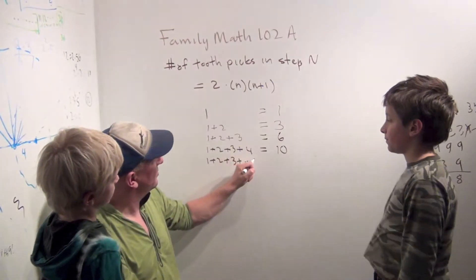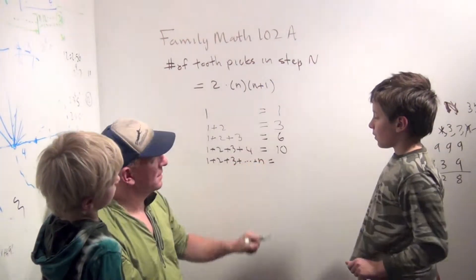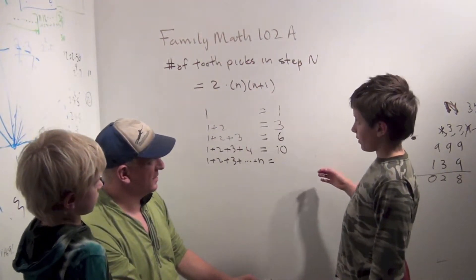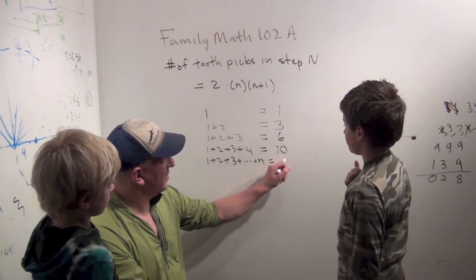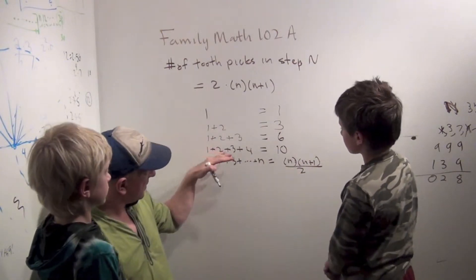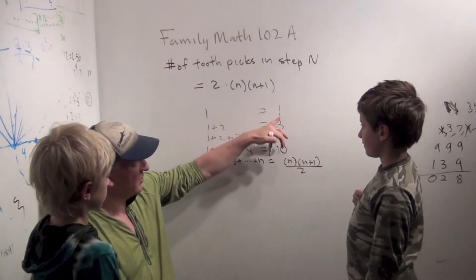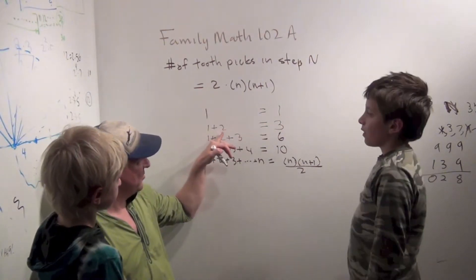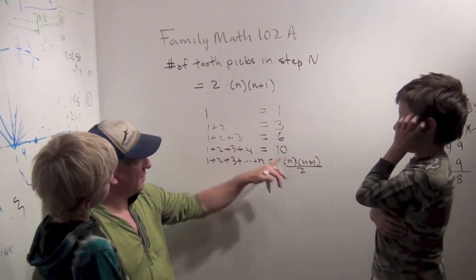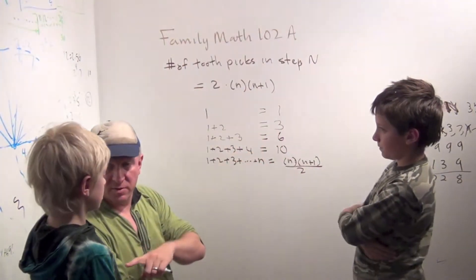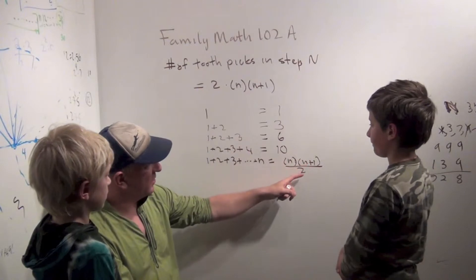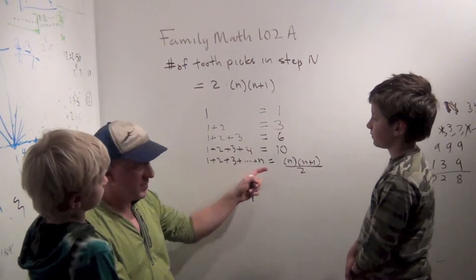Do you remember what the formula for the sum of the integers up to N is? It's N times N plus 1 over 2. So for N=1: 1 times 2 over 2 is 1. Up to N=2: 2 times 3 divided by 2 is 3. For N=3: 3 times 4 is 12, divided by 2 is 6. For N=4: 4 times 5 is 20, divided by 2 is 10. So N times N plus 1 over 2 gives us the sum of integers.